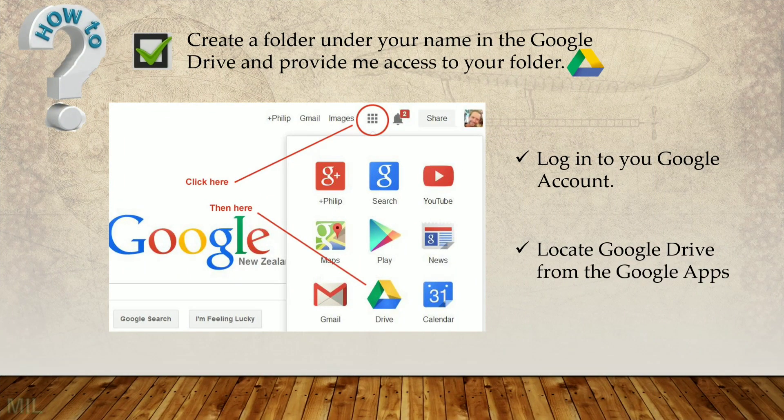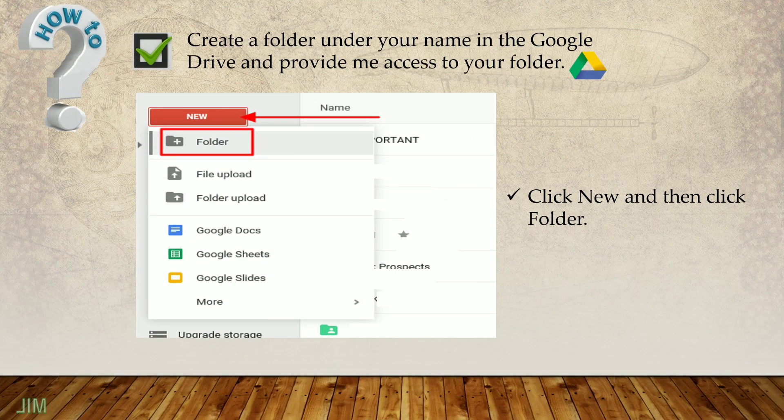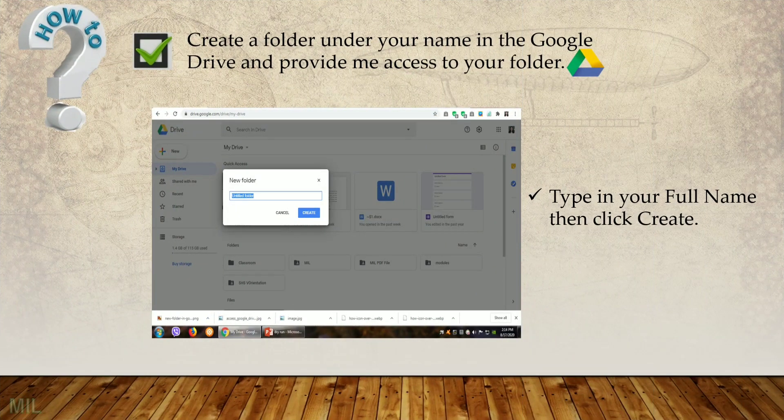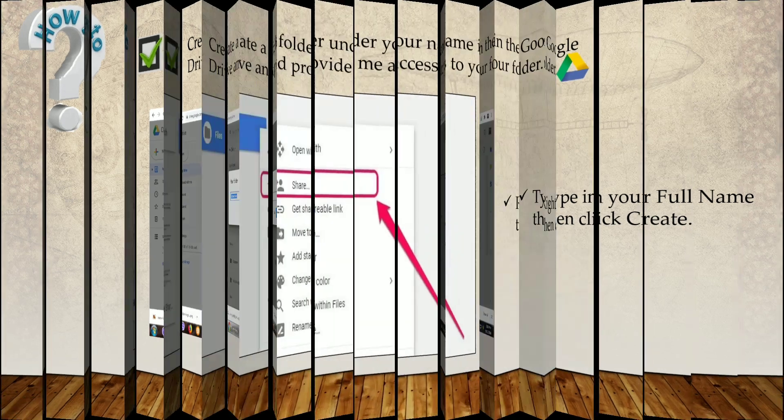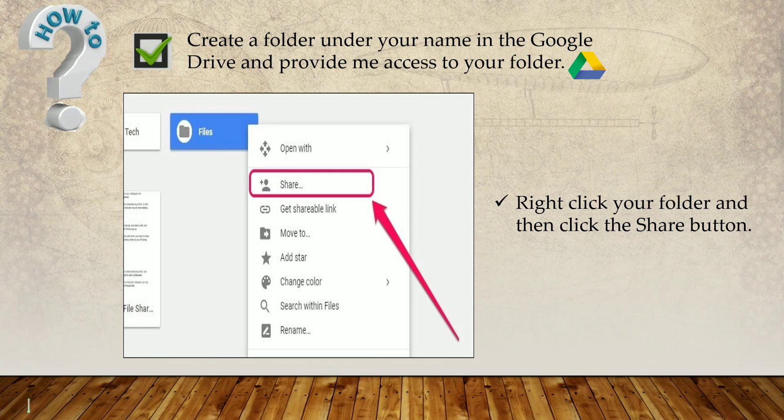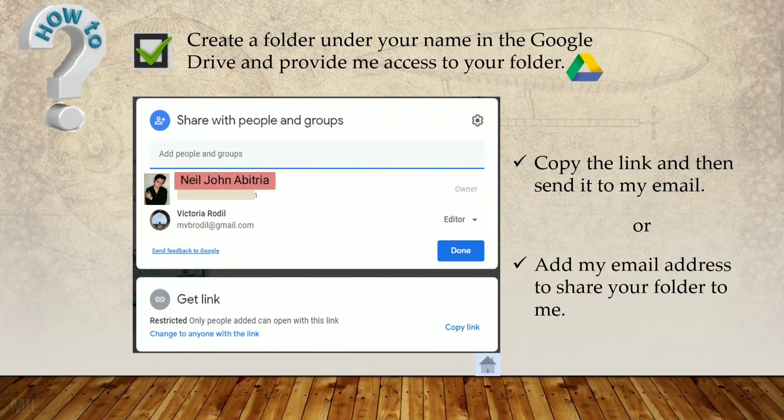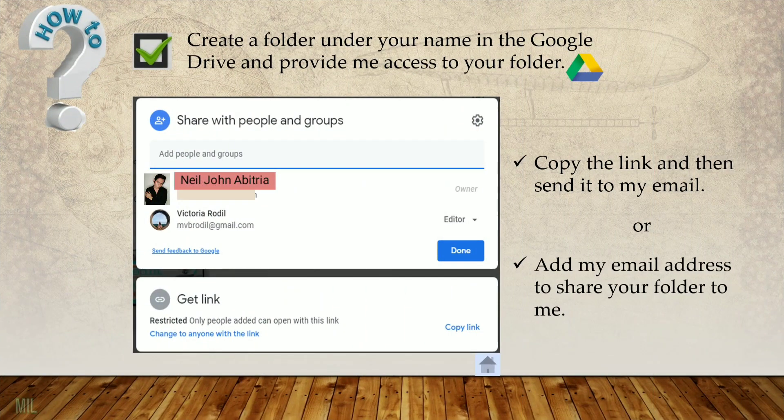And to create a folder in your Google Drive and to provide me access to your folder, here's what you're going to do. First, login to your Google account. Then locate Google Drive from the Google Apps. And by clicking New, just click Folder to create your folder under your name in the Google Drive. Then don't forget to type your full name. Then click Create. And to provide me access to your folder, you just simply right click your folder and then click the Share button or you can copy the link and then send it to my email. Or you add my email address to share your folder to me.